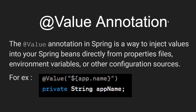The @Value annotation in Spring is a way to inject values into your Spring beans directly from property files, environment variables, or other configuration sources. For example, if we have a class with a variable named 'appName' and we want to provide its value not from another source but from our property file, we can use the @Value annotation. Whenever you want to set a value inside a field of your bean or object, you can use @Value. Let's move to the editor for further understanding.